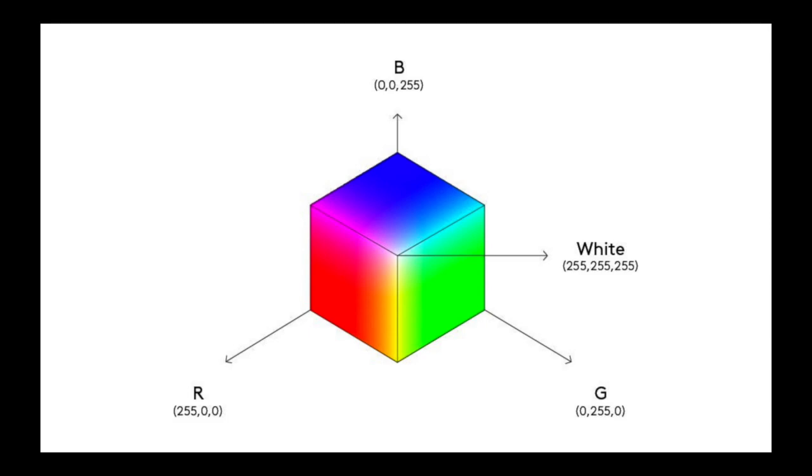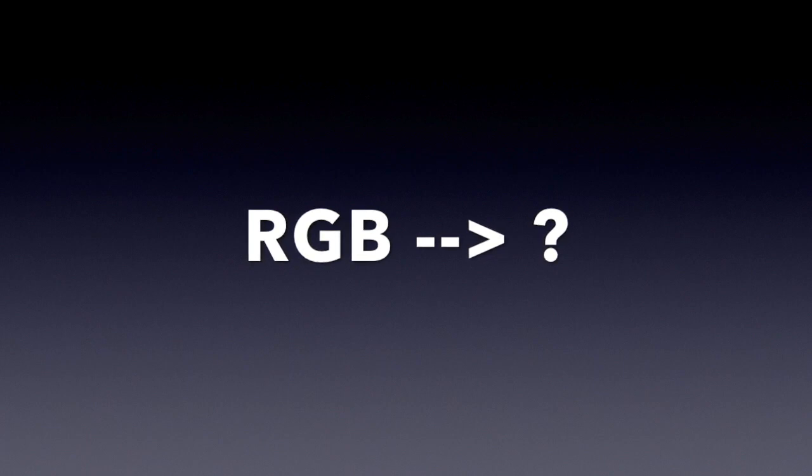With that, you can probably guess what color space conversion does. It takes the image, which is currently in the RGB color space, and converts it into a different color space. But which color space, and why bother converting it?